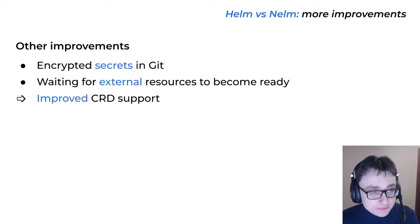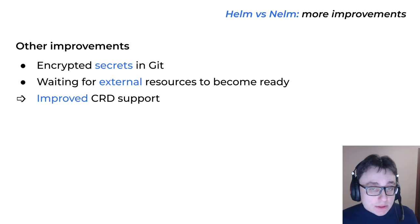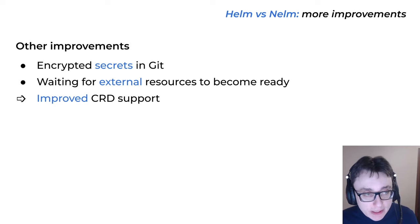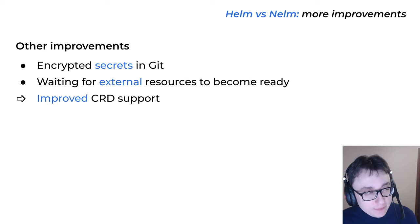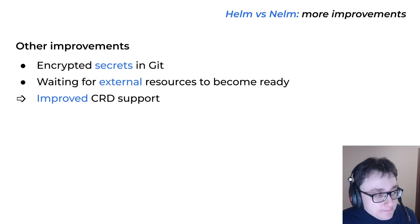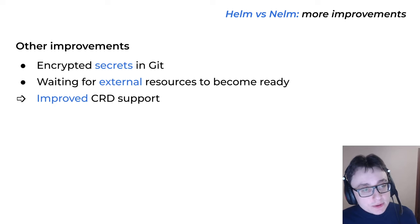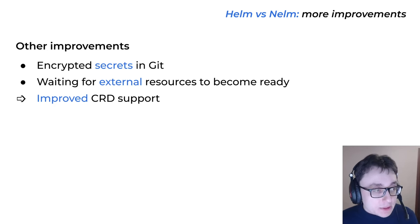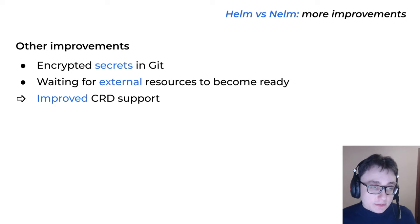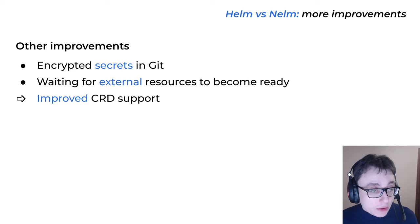We also have improved CRD support compared to what Helm 3 offers. CRDs from the 'crds' directory in Helm charts, when deployed with Helm, are actually only deployed on the very first release — 'helm install'. On subsequent 'helm upgrade' commands, this directory is not even read. We fixed that — the 'crds' directory is read and if there are any changes, they will be deployed not only on 'helm install' but also on release upgrades. Additionally, Helm will not update a CRD if there is already a CRD with that name present in the cluster, but we will.